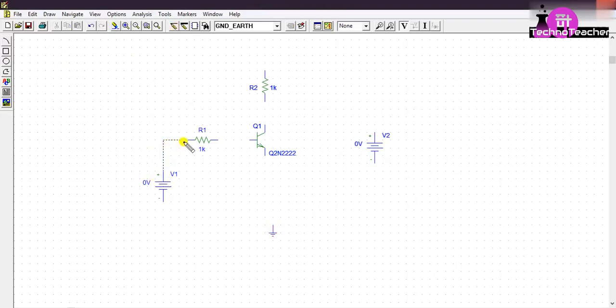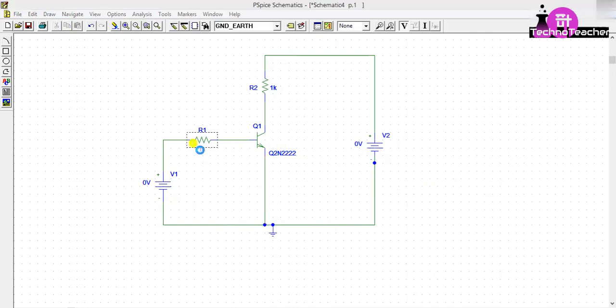Join it with wires, then right click. Now we need to change this value.